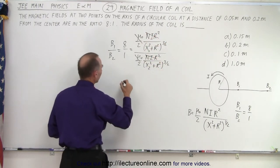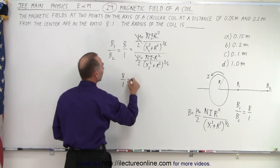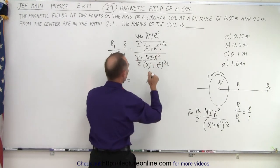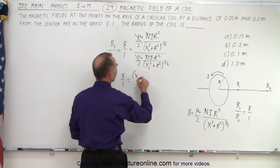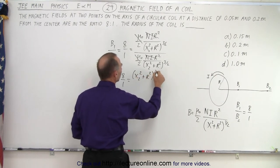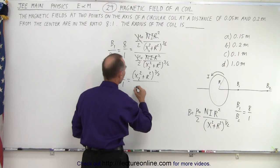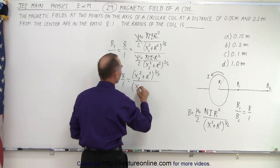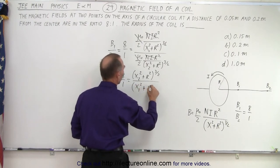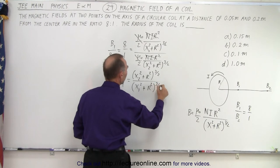So then essentially we get 8 over 1 is equal to x sub 2 squared plus r squared to the three halves power divided by x 1 squared plus r squared to the three halves power.